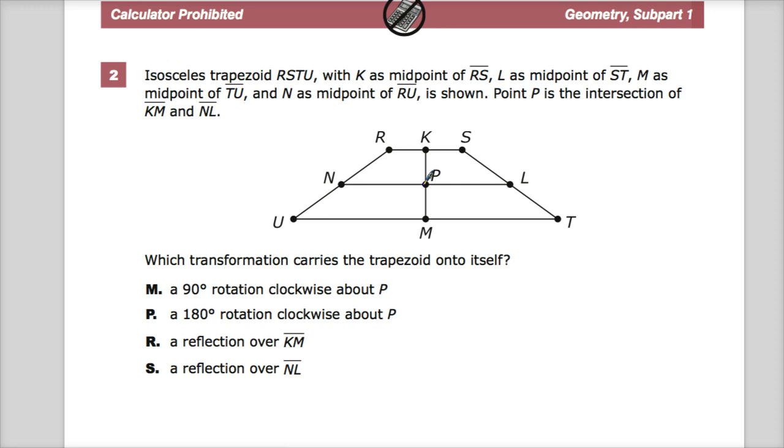Which transformation carries the trapezoid onto itself? Which means, what can you do and end up with the same exact shape that you started with? So we're going to look at that a little bit.